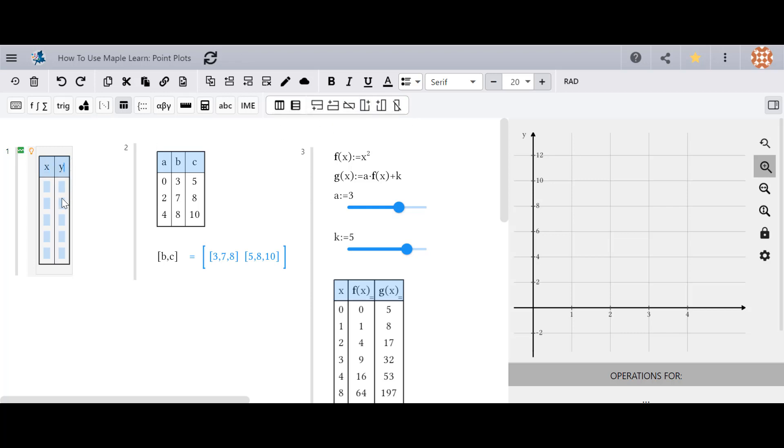Now define the headers by using the desired name for your values and enter your values. A point plot is automatically generated by MapleLearn.